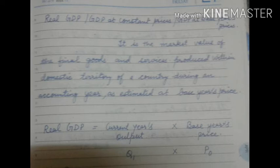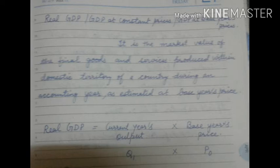Real GDP is the market value of all final goods and services produced within the domestic territory of a country — that is, the market value of all final goods and services made in a country — in one accounting year, as estimated at the base year's price. Its calculation is done using base year prices.